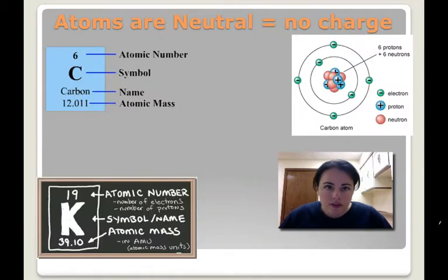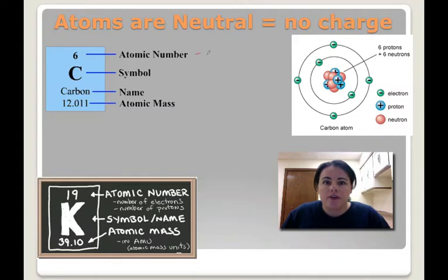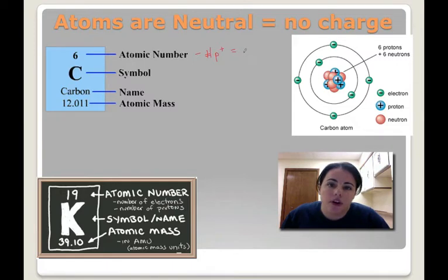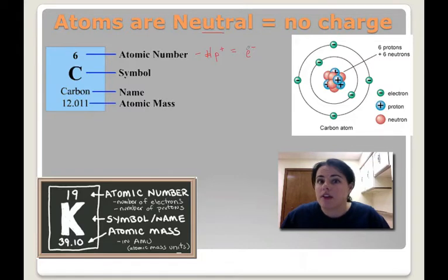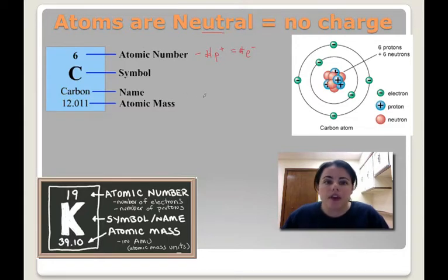First thing I want to do is go over atoms and the fact that they are neutral. If we look at the atomic number, that's the number of protons in an atom. The number of protons always has to equal the number of electrons because atoms are neutral with no charge. So negatives and positives have to cancel out, and you can also tell the number of electrons by looking at the atomic number.